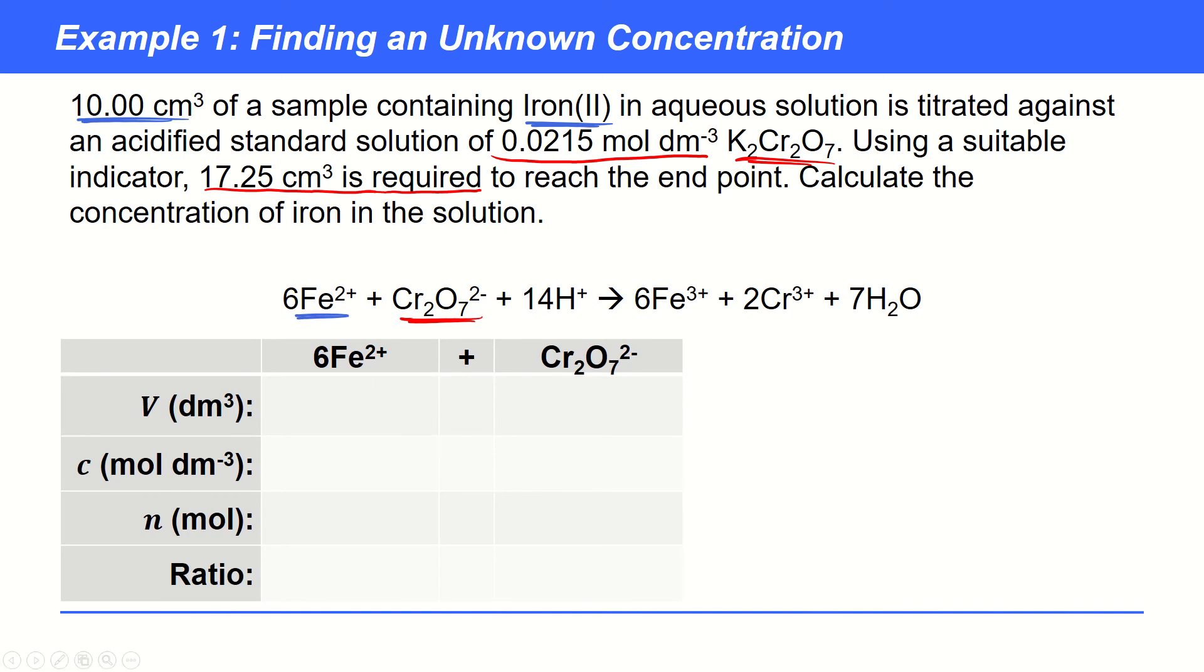And so we can just make a little table where we can gather up the information from the substances. So the dichromate, we've got here 17.25 centimetres cubed, which we always try to work here in decimetres cubed because that's where our formula for calculating moles has that unit in. And that's its concentration. And then iron, we've got a volume of 10 times 10 to the minus 3. And the concentration is what we want to try to find out. So we've mined the question. We've got all the information we need. Now we need to try to actually go about finding this concentration.